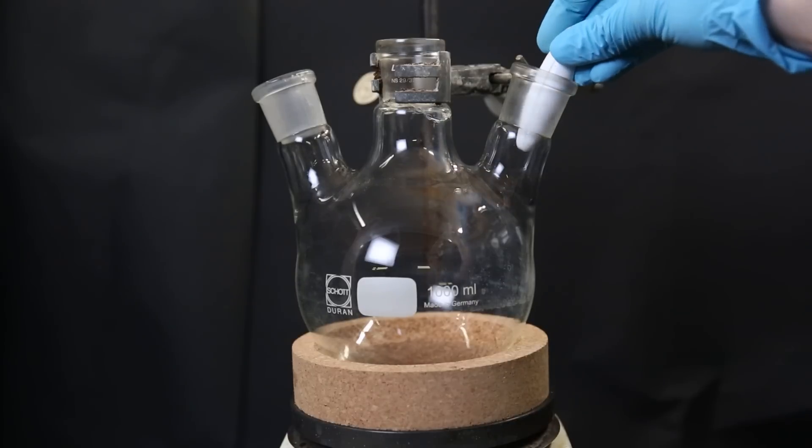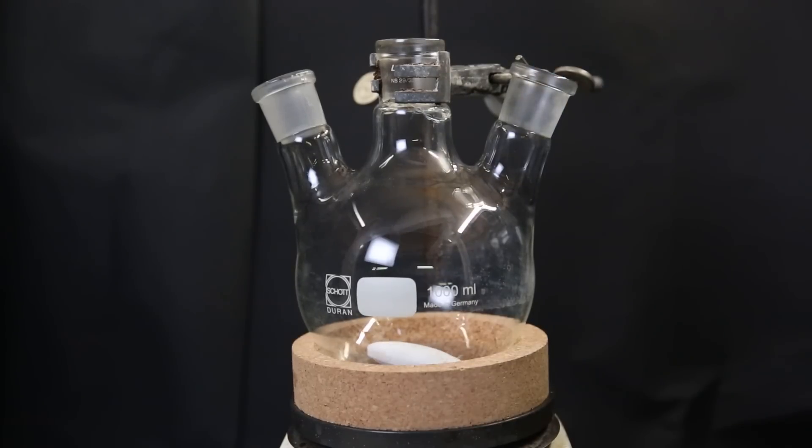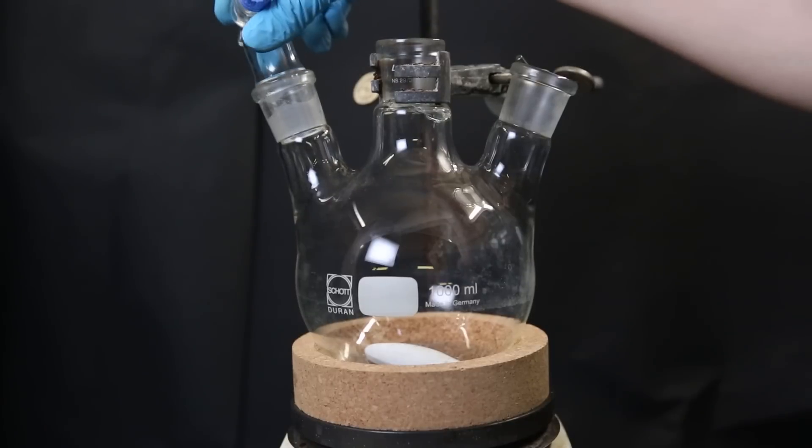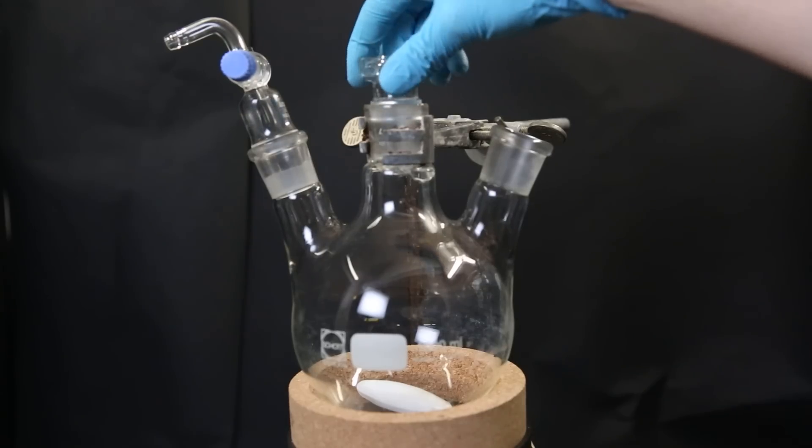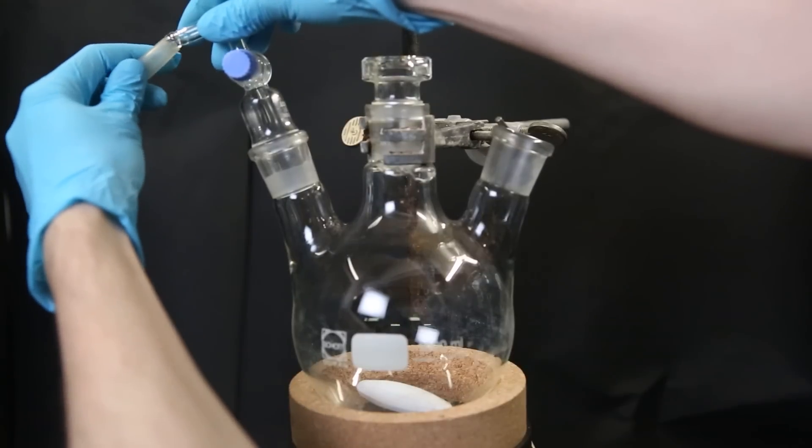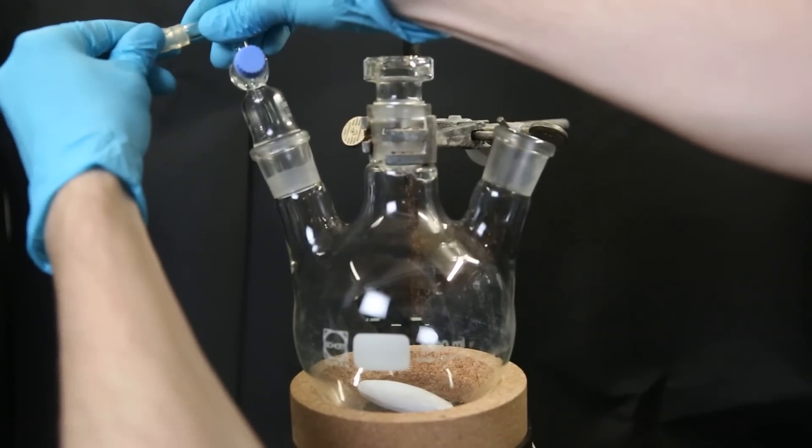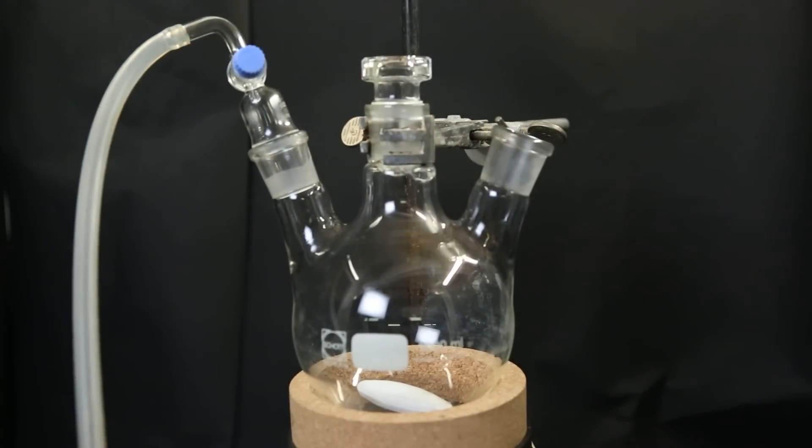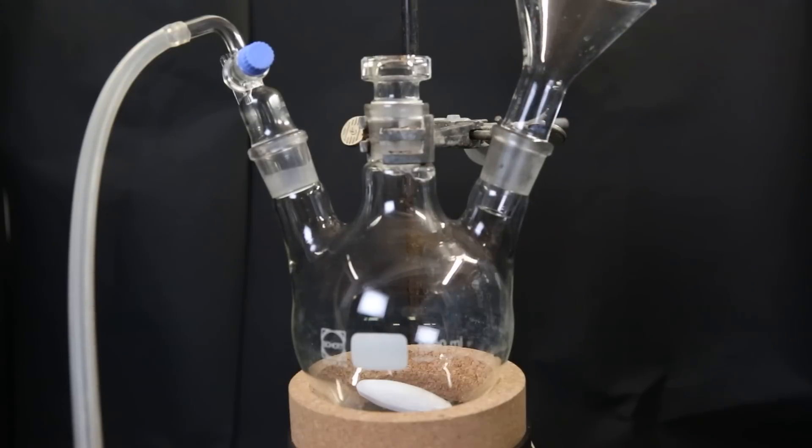To start off, I set up a large 1-liter 3-neck flask and add in a big stir bar. Then I attach a gas adapter and a stopper. I then connect an argon line to the gas adapter and let the argon flush the flask. Then under argon flow, I attach a funnel and add in 9 grams of paraformaldehyde.